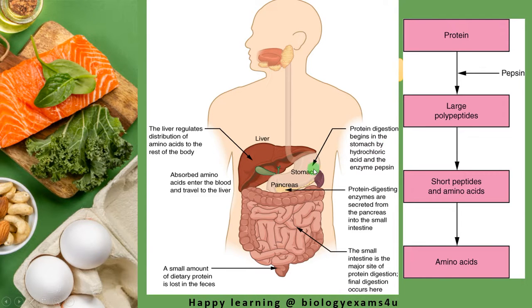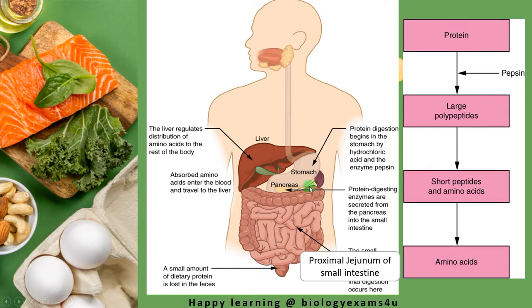Protein digestion happens in the stomach by means of hydrochloric acid and pepsin. Then the pancreas releases enzymes that digest polypeptides into short peptides. Then the small intestine — with enzymes like dipeptidase, aminopeptidase, etc. — breaks down protein into amino acids. It is the site of final digestion of protein, and absorbed amino acids enter the blood and travel to the liver, which regulates distribution of amino acids to different parts of the body. The main site of absorption of protein is the proximal jejunum of the small intestine.